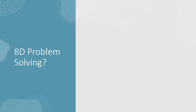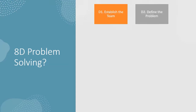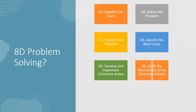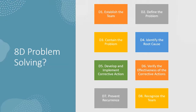The 8D process is broken down into eight steps: establish the team, define the problem, contain the problem, identify the root cause, develop and implement corrective action, verify the effectiveness of the corrective actions, prevent recurrence, and recognize the team.